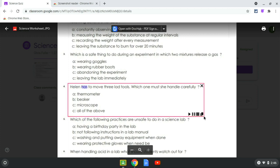Helen has to move three lab tools. Which one must she handle carefully? A, thermometer. B, beaker. C, microscope. C, all of the above.